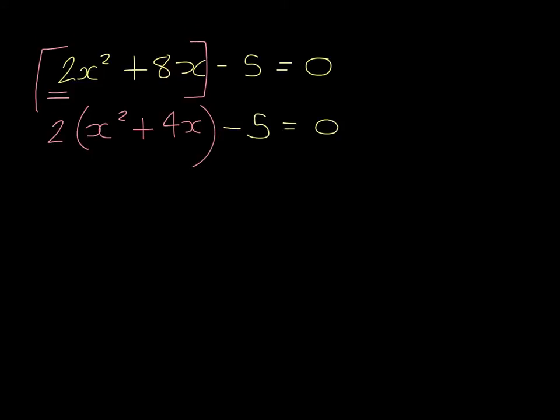I would then start to complete the square with this part here. So the 2 remains outside the bracket. We then complete the square with the x squared plus the 4x. So we write x plus 2 squared.